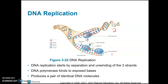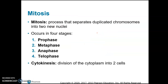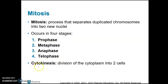Each strand of DNA has an old and a new strand, and that occurs before mitosis — during the S phase of interphase. Mitosis occurs in four stages: prophase, metaphase, anaphase, and telophase. And then after mitosis is cytokinesis.